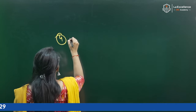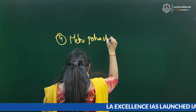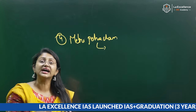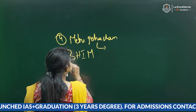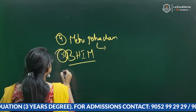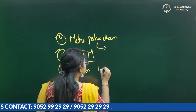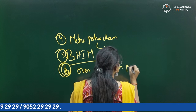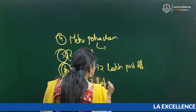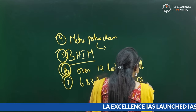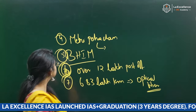The fourth initiative is Meri Pehchan, which provides citizens easy access to government portals. The fifth is BBPS (BMAP), which enables mobile payments electronically. Additionally, as per the mission, over 12 lakh post offices are electronically integrated, and 6.83 lakh kilometers of optical fiber connections have been laid. These are the initiatives taken by the Government of India under the Digital India program.